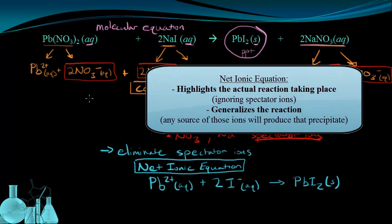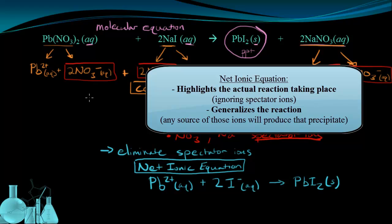And this net ionic equation does two things. It highlights the actual equation taking place, and it also generalizes the reaction, meaning that any source of lead ions combined with any other source of iodide ions will give you this particular reaction product.